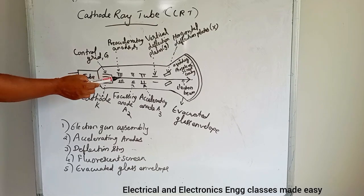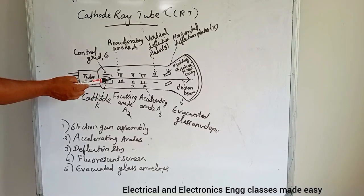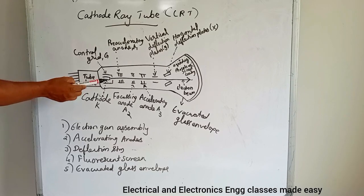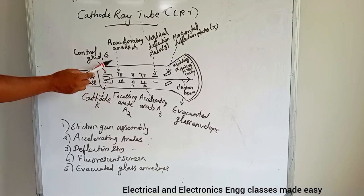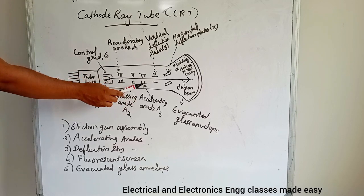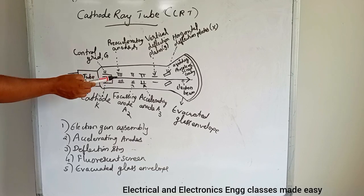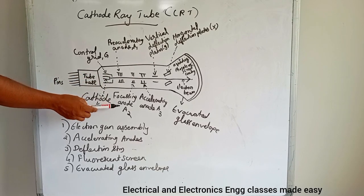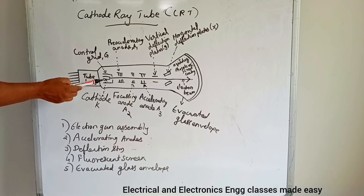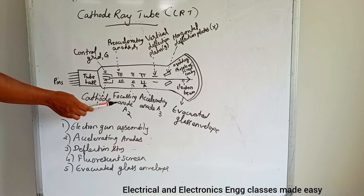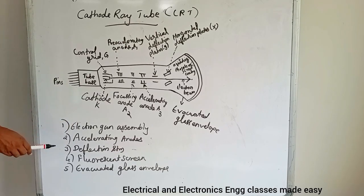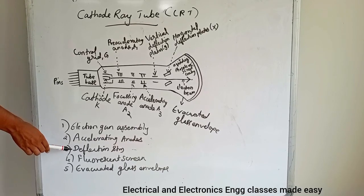The electrons emitted from the cathode pass through a hole in the control grid and are accelerated by the high positive potential applied to the pre-accelerating anode A1 and the accelerating anode A3. The electron beam is focused by the focusing anode A2.